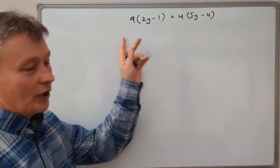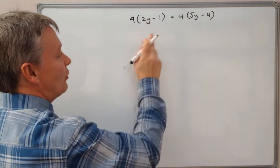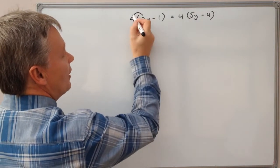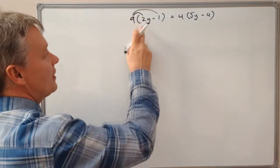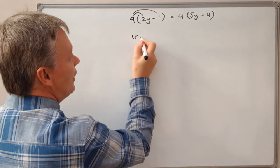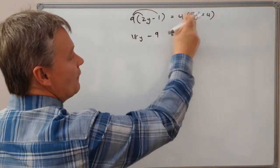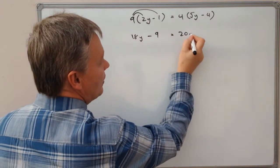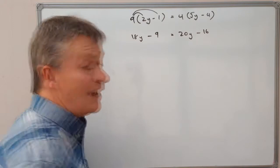What I did first, which I'm going to do in this one, is I multiplied out these brackets. 9 multiplied by 2y and 9 multiplied by minus 1. Well, 9 times 2y is 18y and 9 times minus 1 is minus 9, and that equals 4 times 5y is 20y and 4 times minus 4 is minus 16.